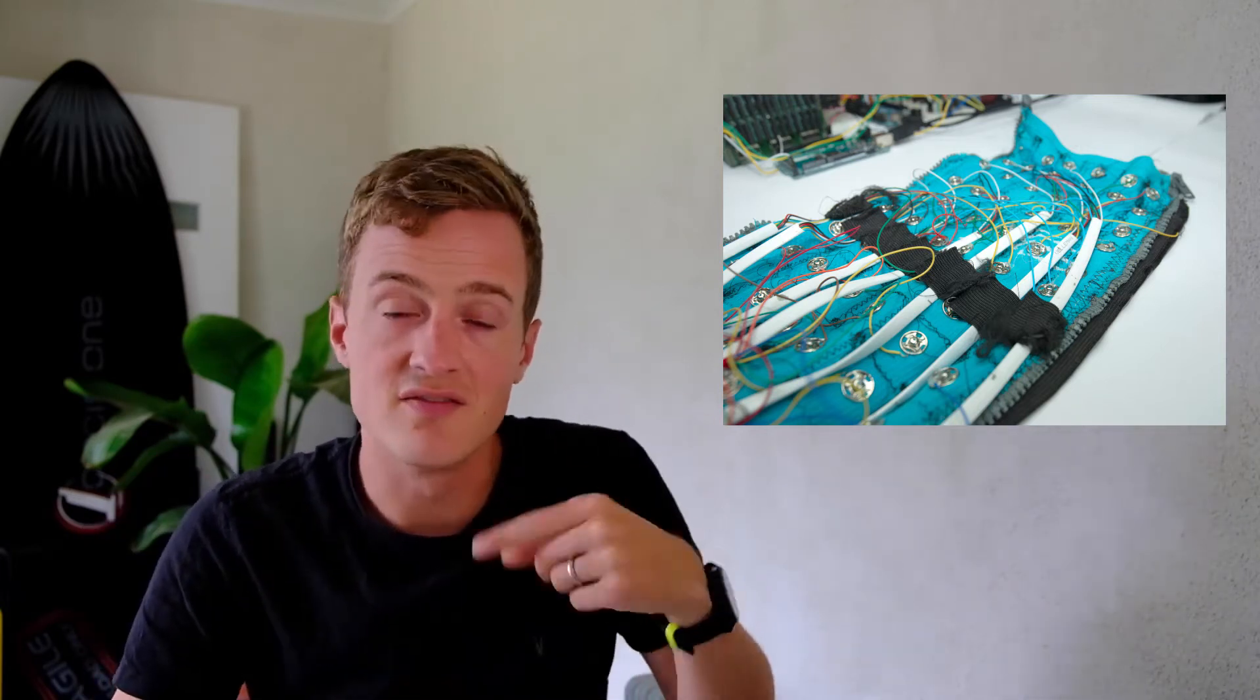We then used snap connectors to connect from the outside of the sleeve to the electrodes on the inside, soldered wires onto each of those snap connectors, and then grouped those wires into veins that ran up the sleeve. Now, in order to get a good connection between that electrode fabric and your arm, you need to use electrode gel.